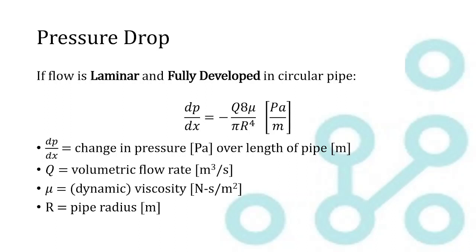So, now just to go through a couple equations that would be useful for you as you're working through homeworks and example problems. If you have laminar flow that's fully developed in a circular pipe, the pressure drop can be calculated using this equation. So, dP over dx, that's change in pressure over change in length of the pipe, is equal to negative Q times 8 times mu over pi r to the 4th. Again, keep track of your units here. Everything's in meters, newtons, seconds, pascals.